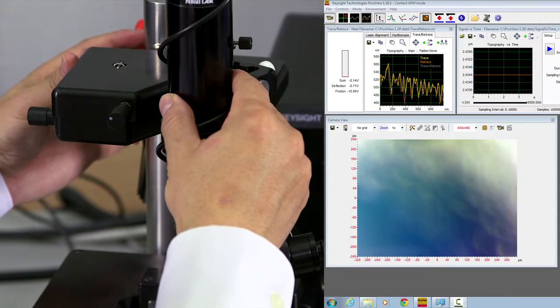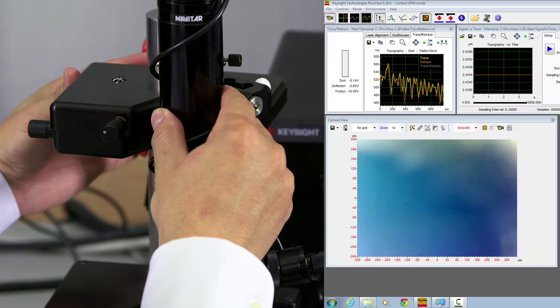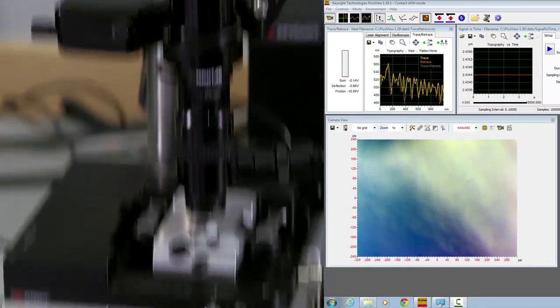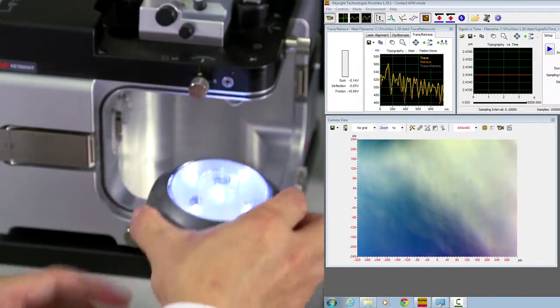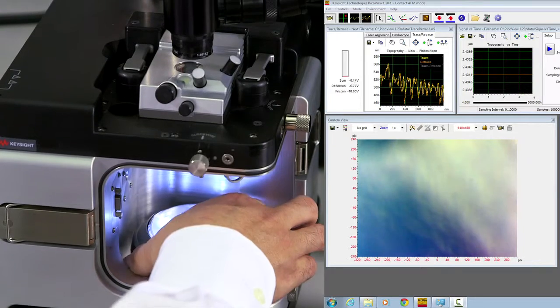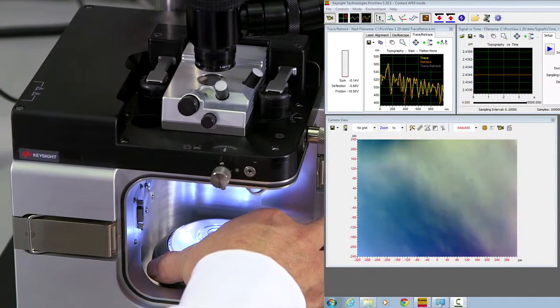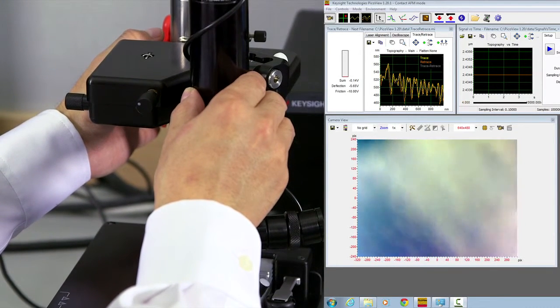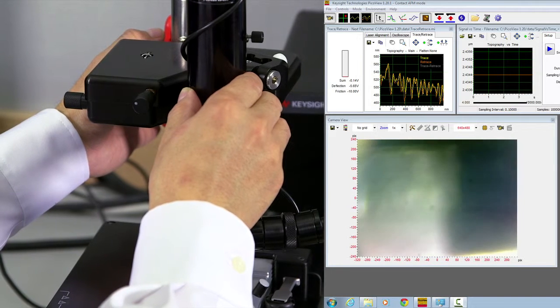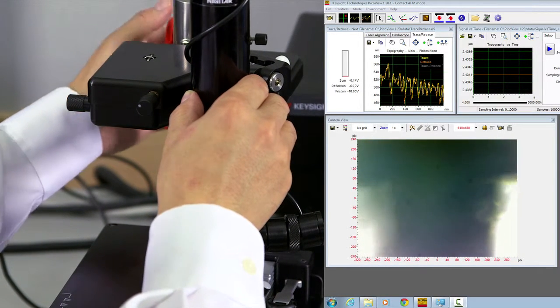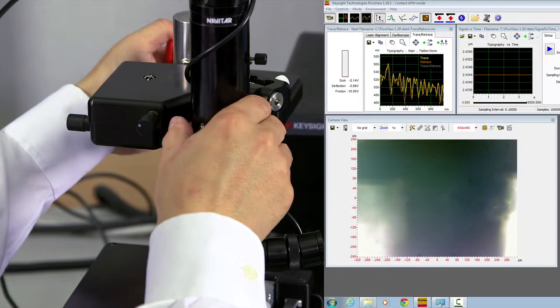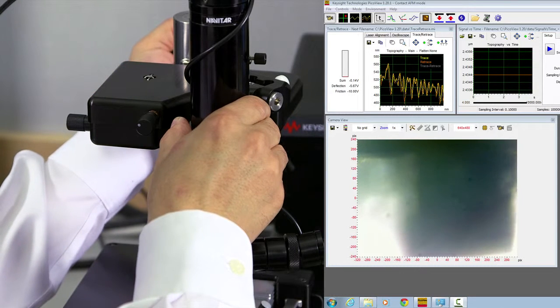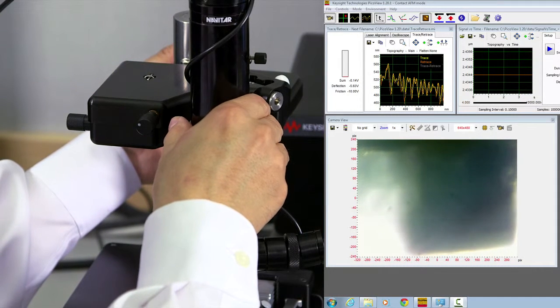You can rotate the optical microscope assembly itself. Make sure it can be rotatable. Then you turn on the LED light and put in the environment chamber to allow some transmission light through the scanner itself. Rotate until you can see something, and then turn the Allen key to tighten the set screw until the optical microscope assembly cannot be rotated anymore.